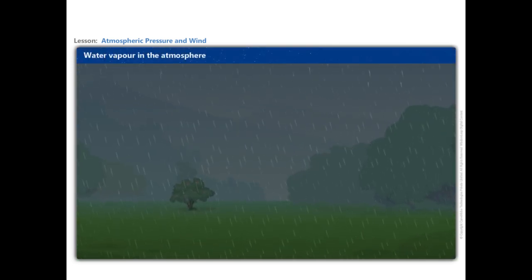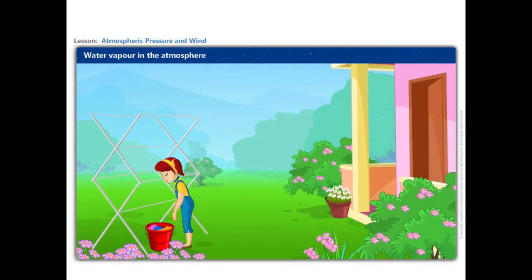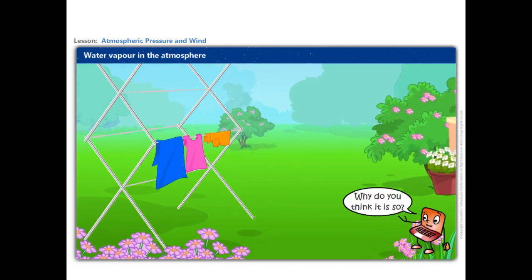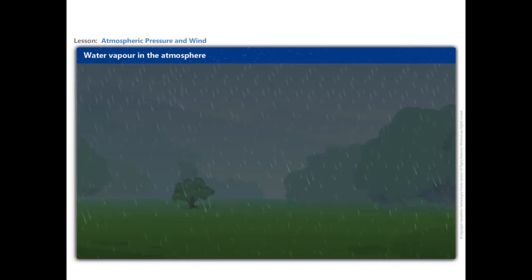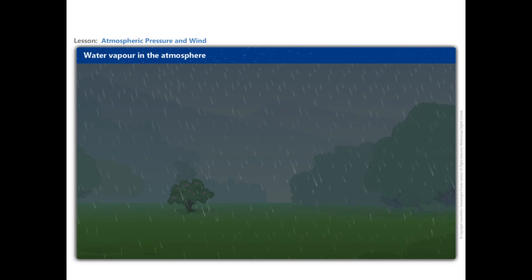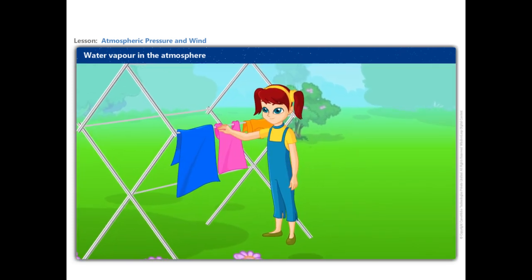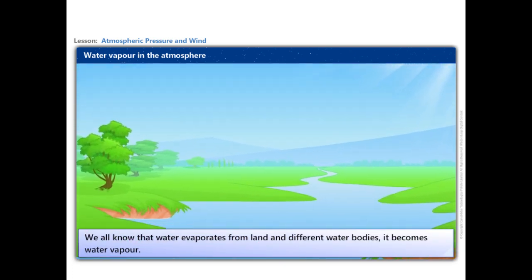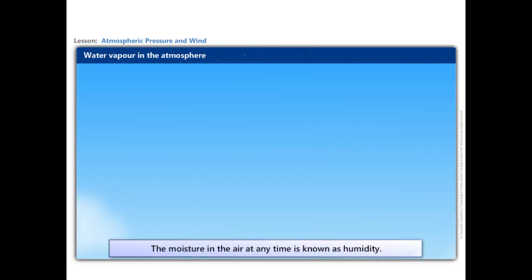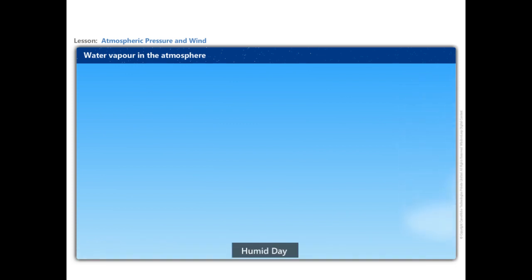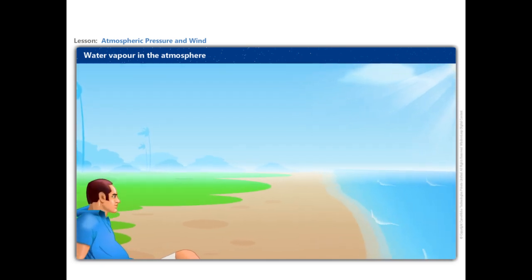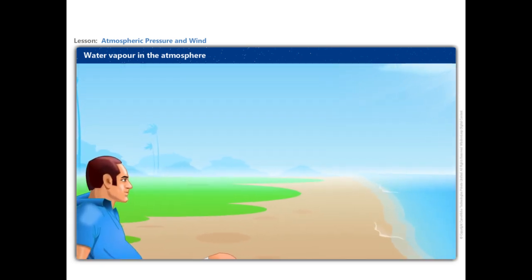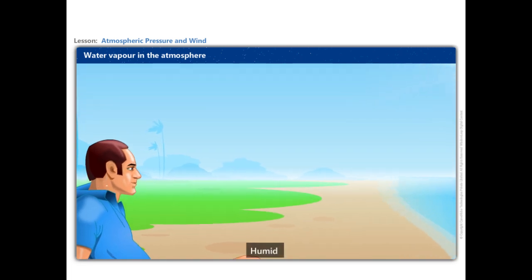Let us look at another element of weather — moisture. During rainy days, clothes take longer to dry and sweat from our body does not evaporate easily. This is because the moisture content in the atmosphere is very high and it is unable to hold more moisture from wet clothes or from our body. Water evaporates from land and different water bodies to become water vapor. The moisture in the air at any time is known as humidity. When the air is full of water vapor, we call it a humid day. As the air gets warmer, its capacity to hold water vapor increases, making the environment more and more uncomfortable.